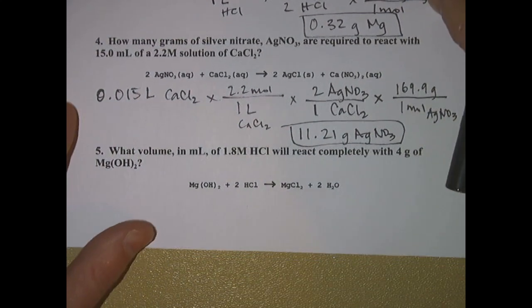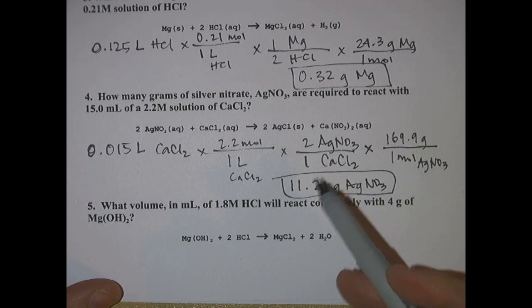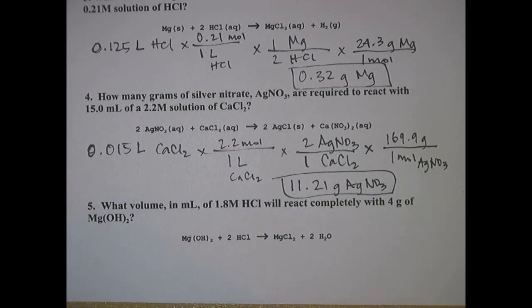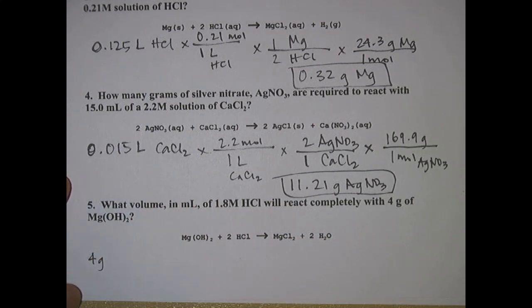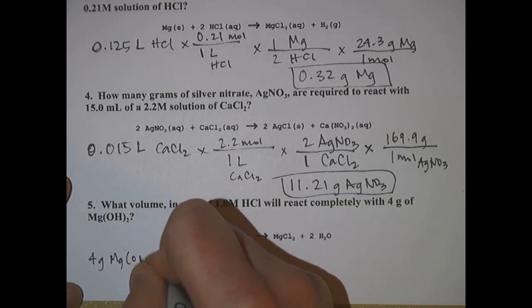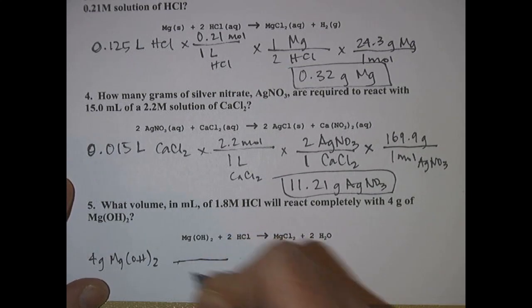Finally in the last problem: what volume in milliliters of 1.8 molar HCl react completely with four grams of magnesium hydroxide. This is the opposite of problems number three and four, where we're going to start with grams and we're going to end in milliliters. Take your four grams of magnesium hydroxide, and the molar mass of magnesium hydroxide is about 58.3 grams.